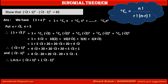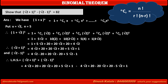Therefore, the left-hand side of the given problem is (√2 + 1)^5 + (√2 − 1)^5. Expanding the first bracket: 4√2 + 20 + 20√2 + 20 + 5√2 + 1, plus the second bracket. Due to the plus sign, we add both expansions. Canceling the opposite terms and adding the remaining terms, we get the answer 82, which is our required right-hand side.